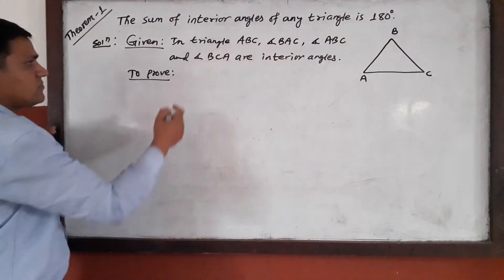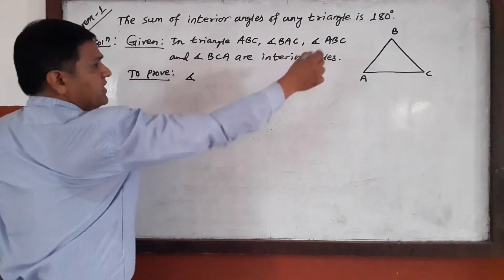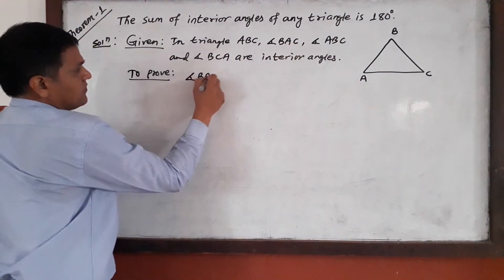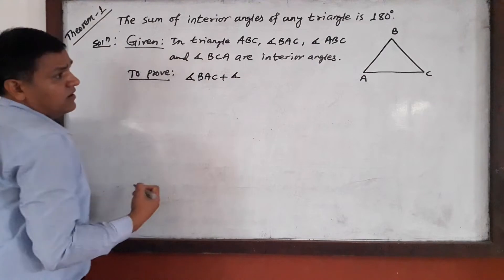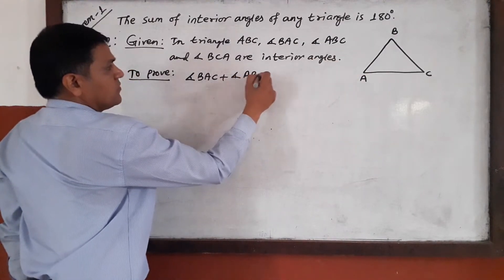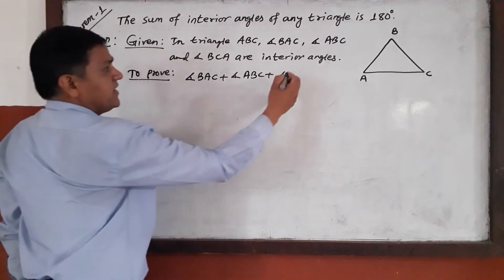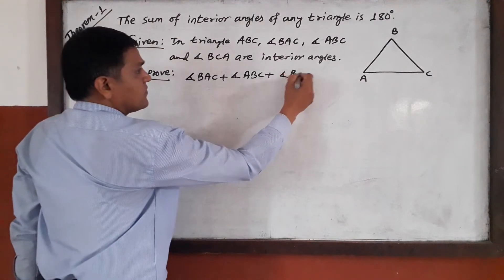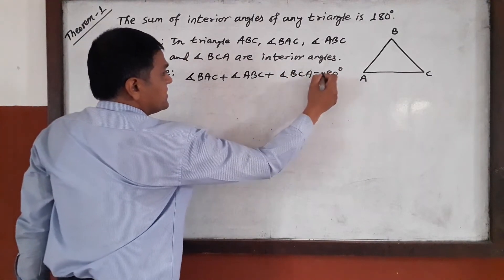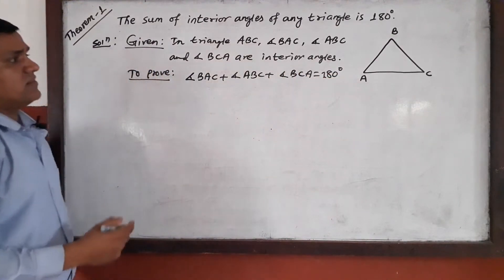That means angle BAC plus angle ABC plus angle BCA is equal to 180 degrees — that is, two right angles.